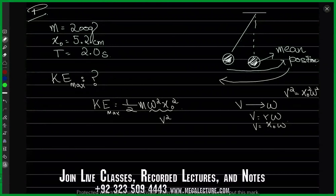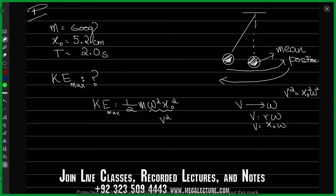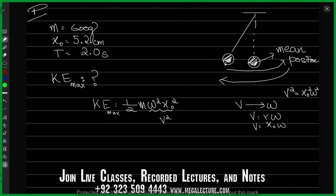The problem was that you have a pendulum with a time period of two seconds, where the mass of the bob attached to the string is 600 grams. Suppose that I raise this pendulum to some height and release it. The displacement I give it is the amplitude of the oscillation, which is 5.2 centimeters — that's the value of x naught. We want to find the maximum kinetic energy of this pendulum, meaning we need to find the maximum speed.